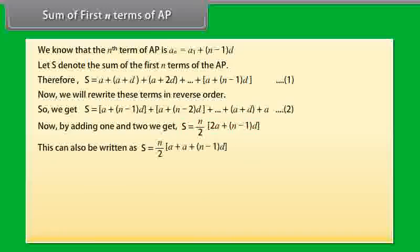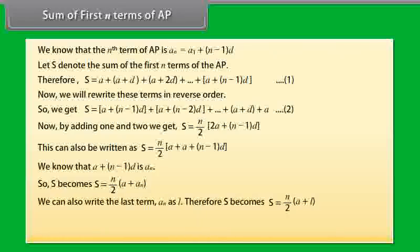This can also be written as... We know that A + (n-1)D is Aₙ. So S becomes (n/2)(A + Aₙ). We can also write the last term Aₙ as L. Therefore, S becomes (n/2)(A + L).